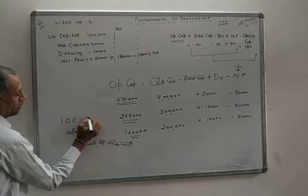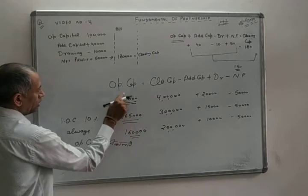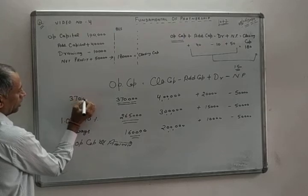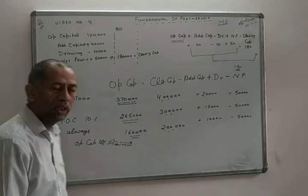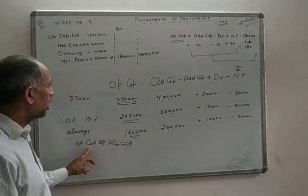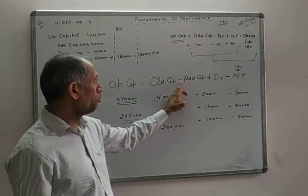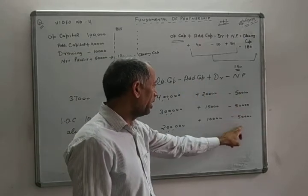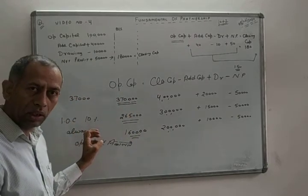Interest on capital is always calculated on the opening capital amount, not the closing amount. To calculate opening capital: Closing capital − Additional capital + Drawing − Net profit = Opening capital. Thank you.